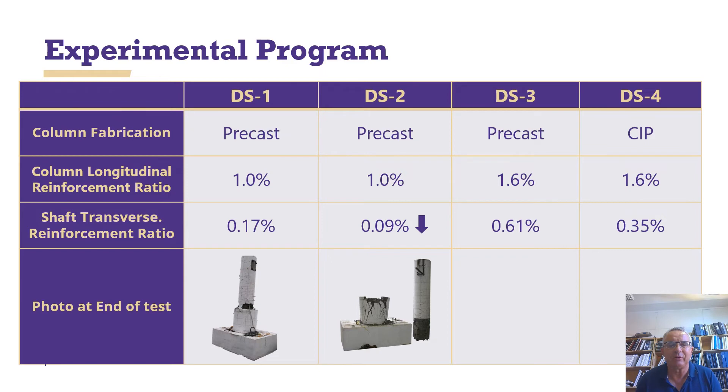In the second specimen, we made the column the same, but we reduced the shaft transverse reinforcement by about a factor of 2. You can see the difference between the left picture and the right picture. In the first one, the two columns are the same strengths, but the shaft got weaker going from left to right. So you can see in the first picture on the left, the column capacity controls it and the shaft is okay. In DS2, the shaft is weaker, so that's what fails, and the column actually comes out as one big piece.